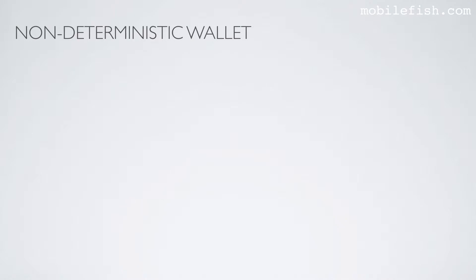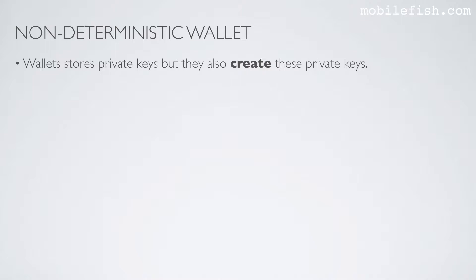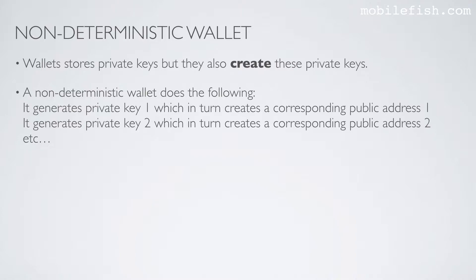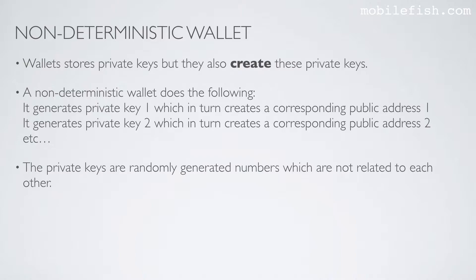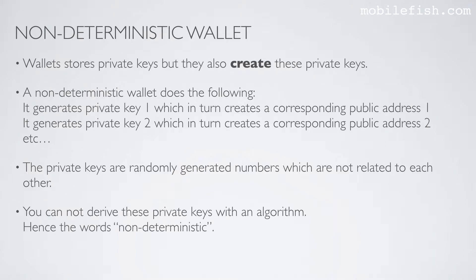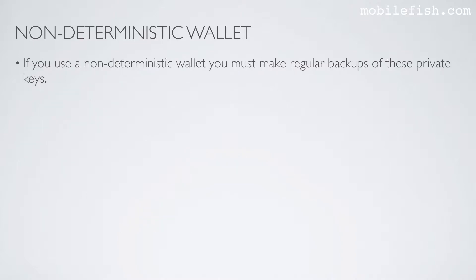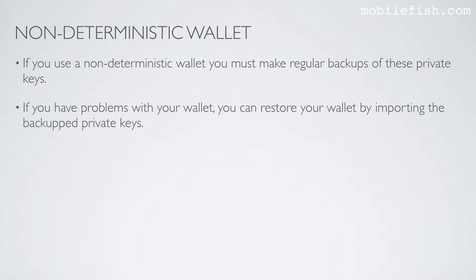A non-deterministic wallet does the following: it generates private key 1, which in turn creates a corresponding public address 2, etc. The private keys are randomly generated numbers which are not related to each other. You cannot derive these private keys with an algorithm — hence the word non-deterministic. If you use a non-deterministic wallet you must make regular backups of these private keys. If you have problems with your wallet you can restore it by importing the backup private keys.